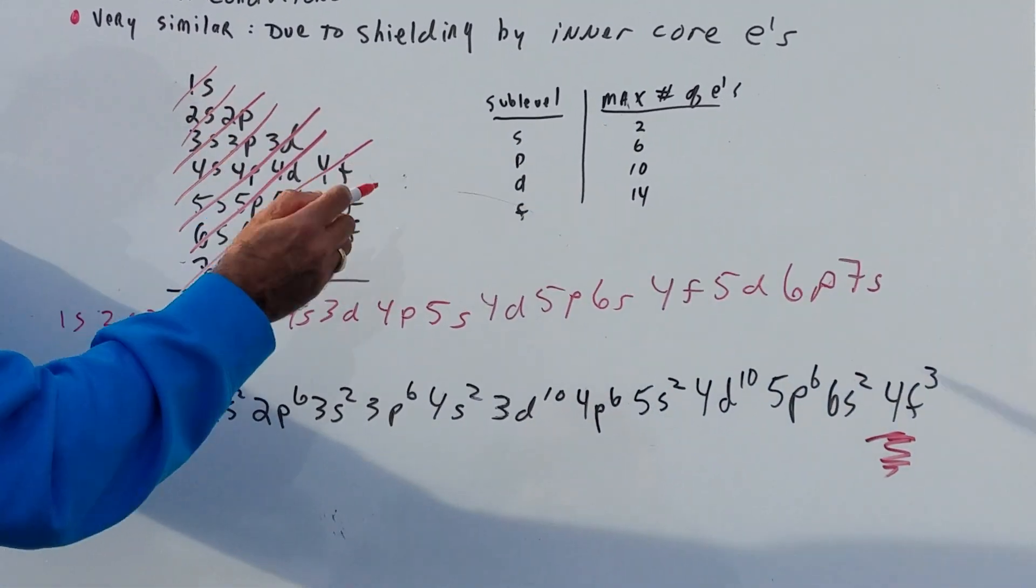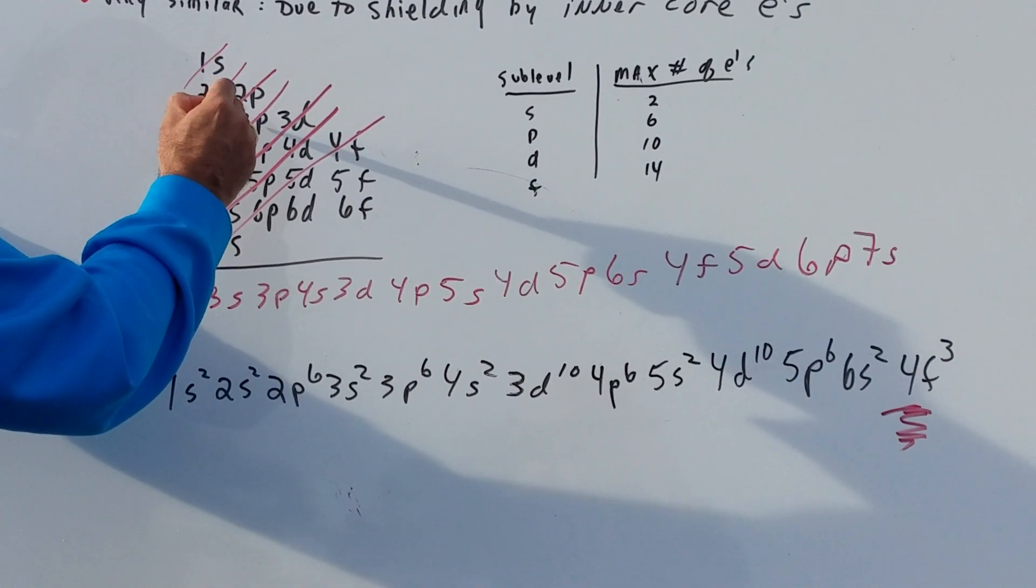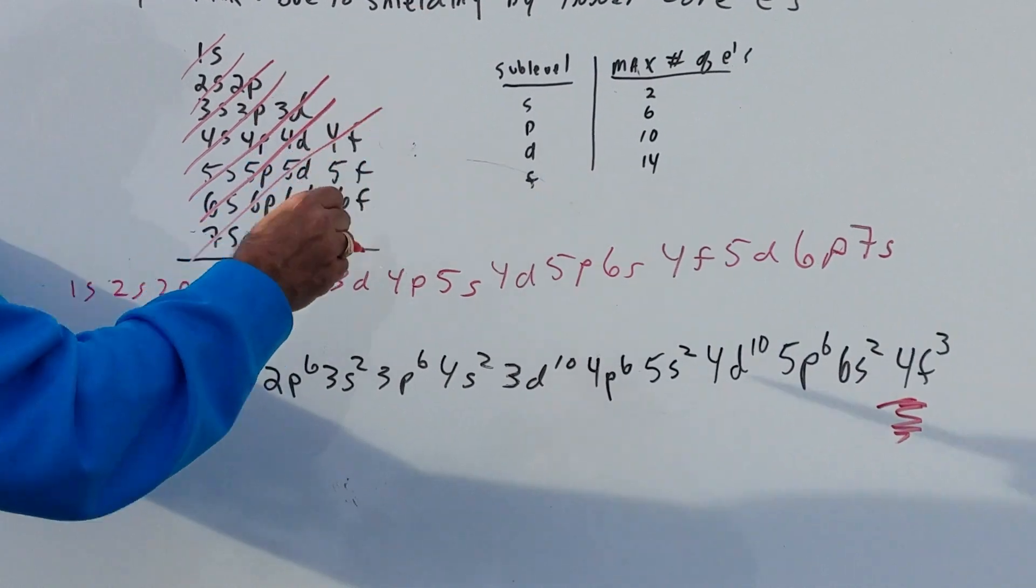Now, what we'll do is once you got it, another way you could have done it is you could have wrote 1s, then 2s, 2p, 3s, 3p, 3d. So I'll let you figure that out.